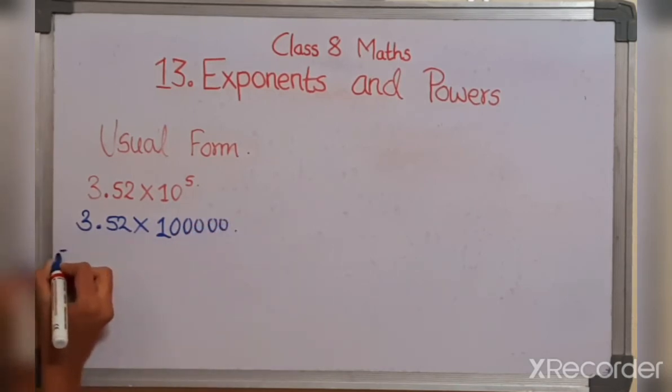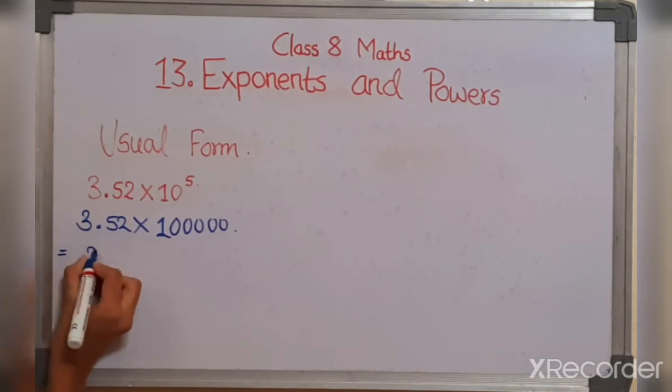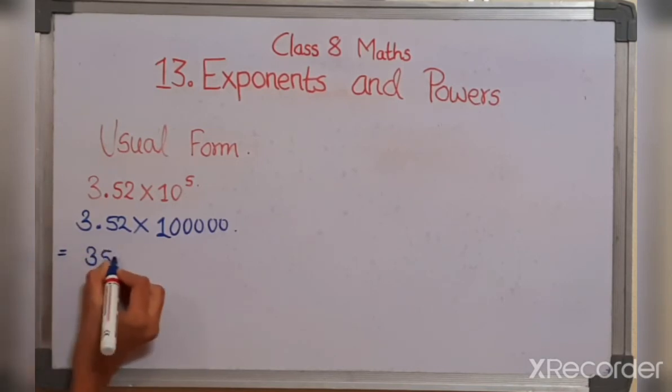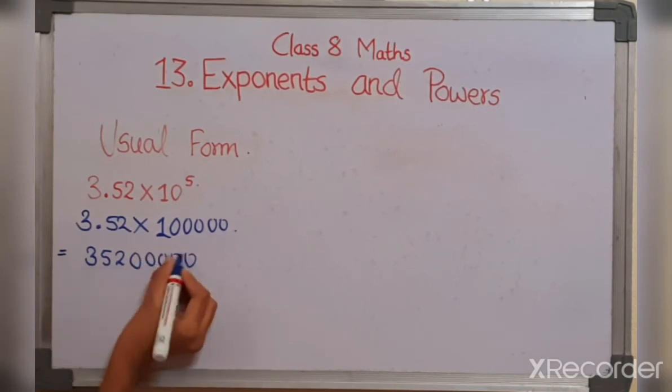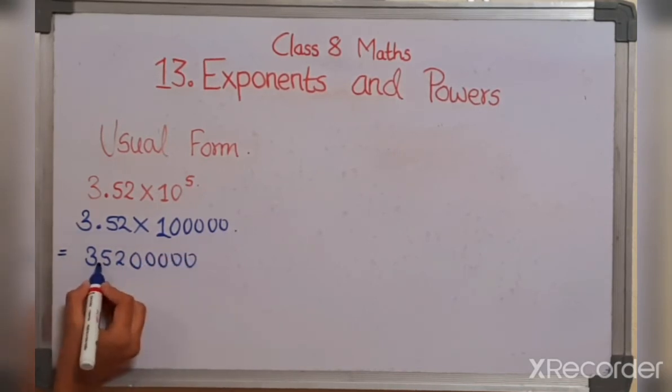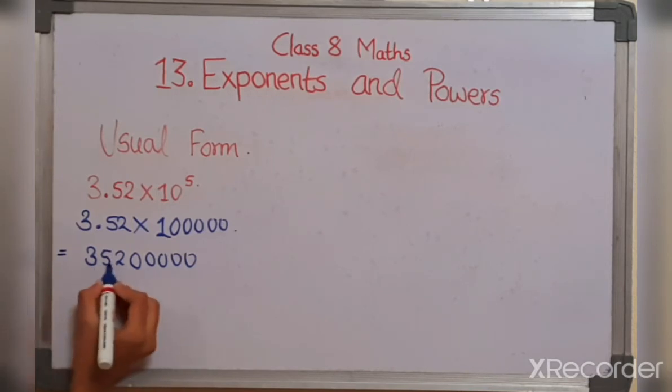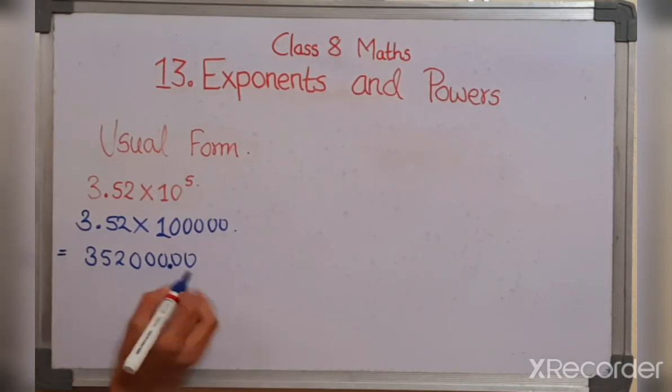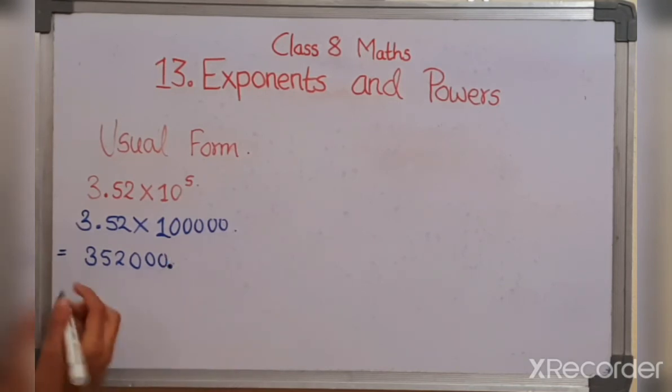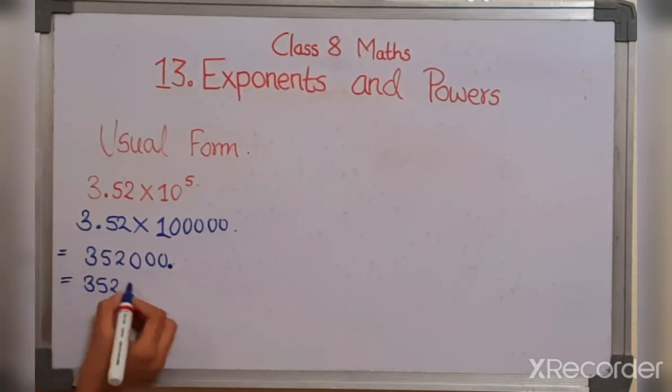Which is further equal to 3, 5, 2 with five zeros. Now the decimal place was here. So we need to shift it 5 places to the right side. So 1, 2, 3, 4, 5. So we can remove this zero. So the final answer is 352,000.